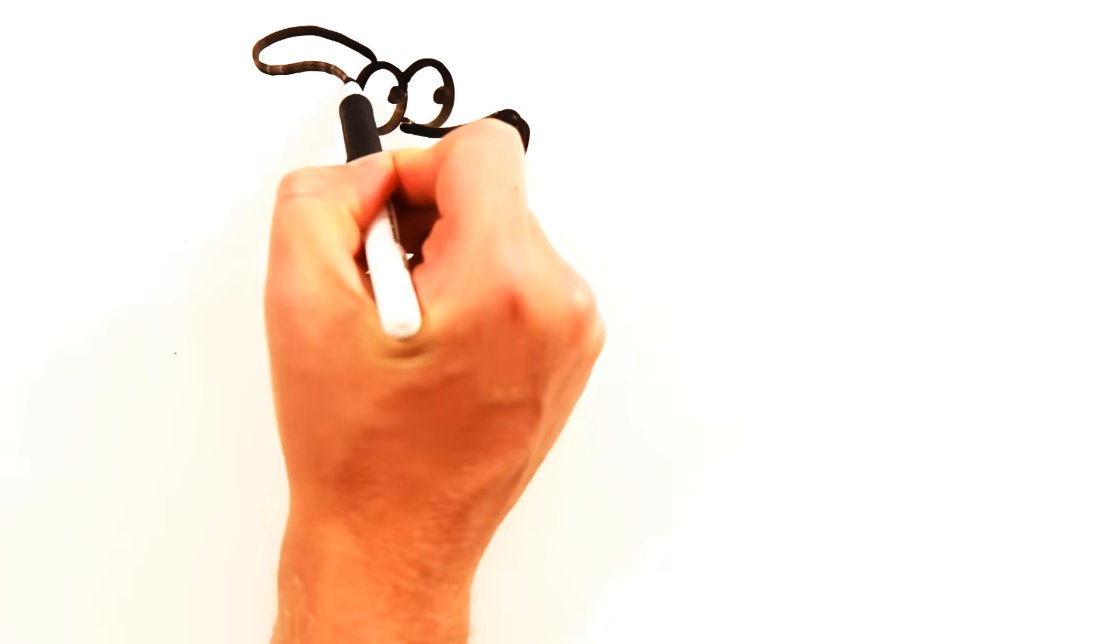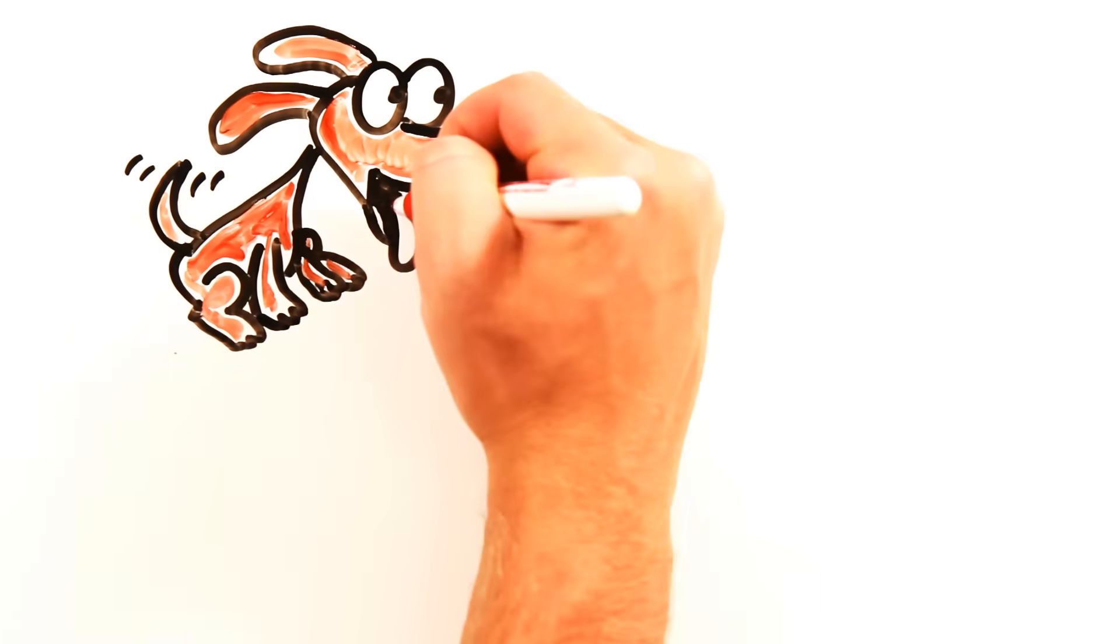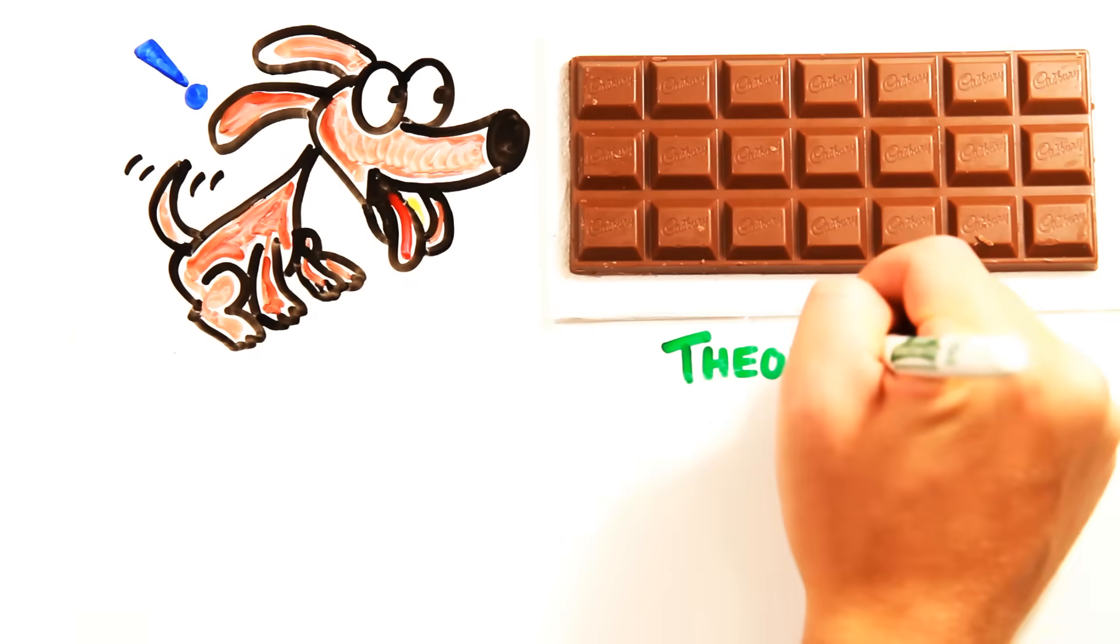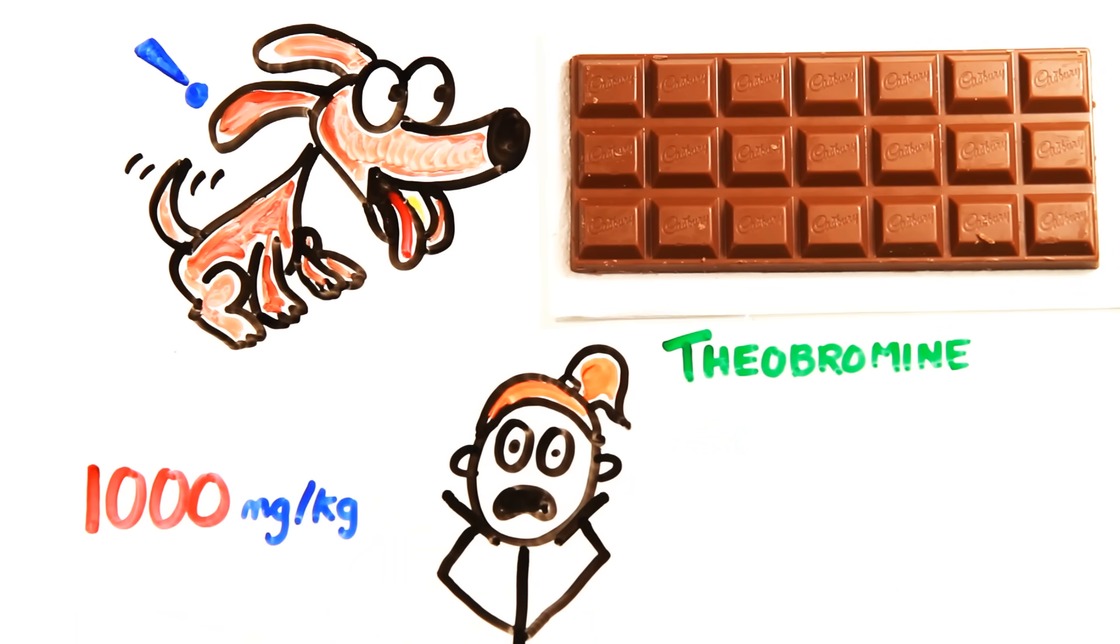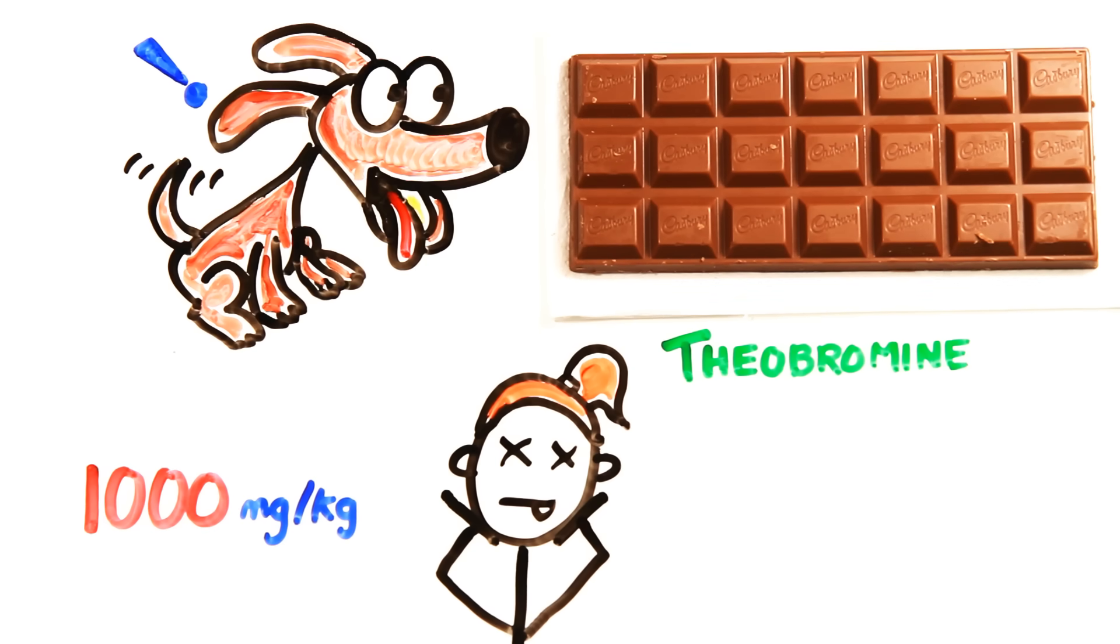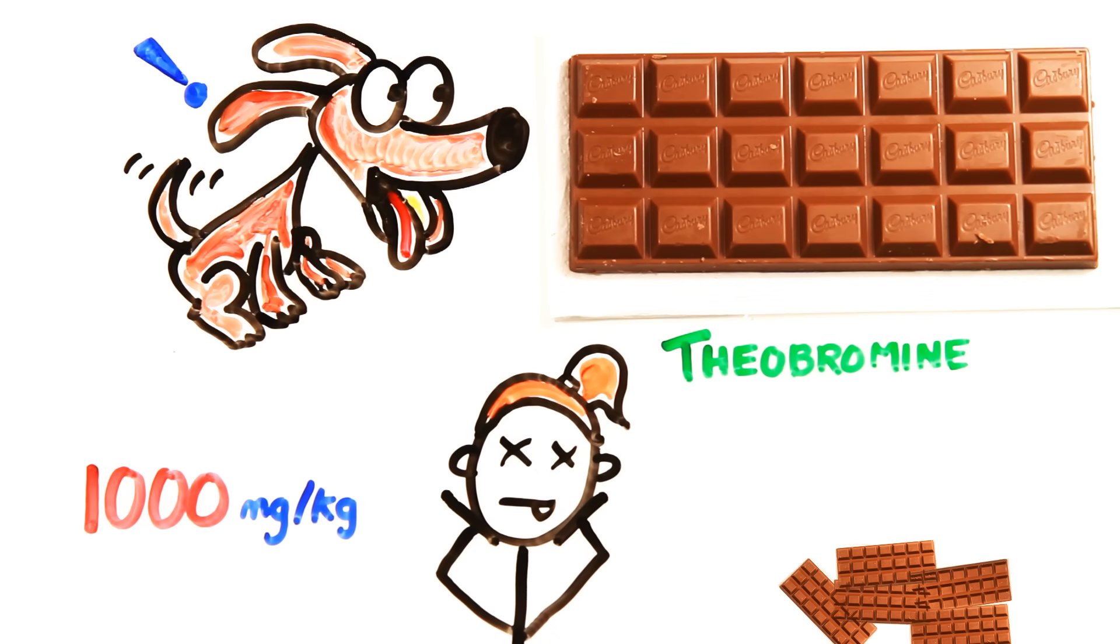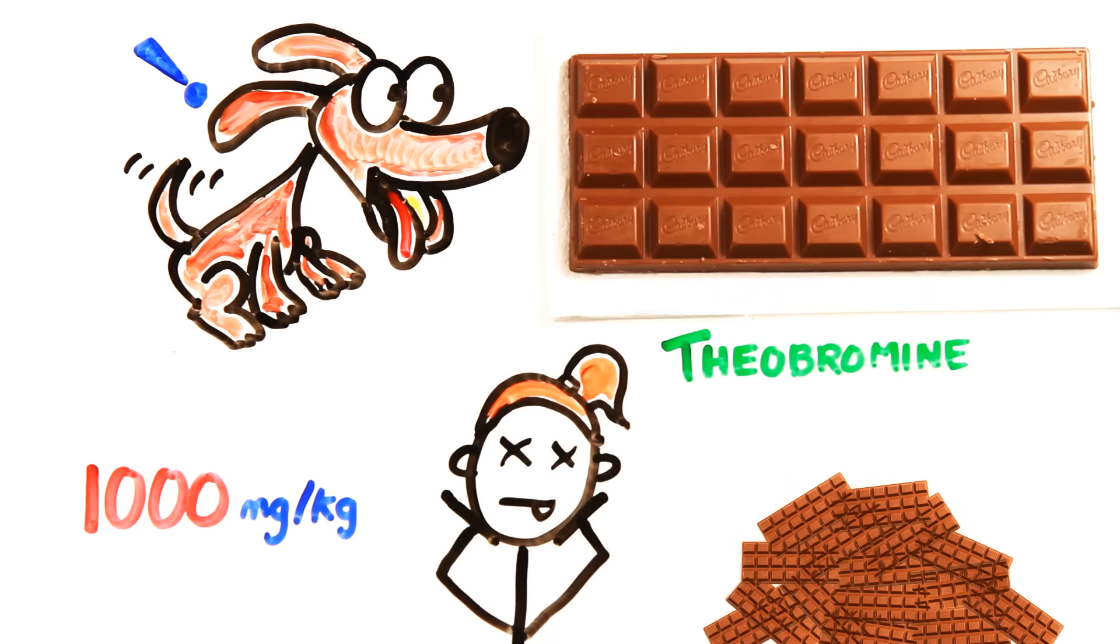If you're worried about your pet's life, you may have heard not to give them chocolate. The same chemical, theobromine, can kill us too. Our bodies metabolize theobromine more effectively, though, with 1,000 milligrams per kilogram being lethal to humans, which is the equivalent of 85 full-sized chocolate bars at once.